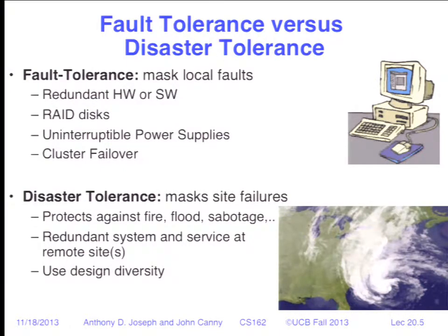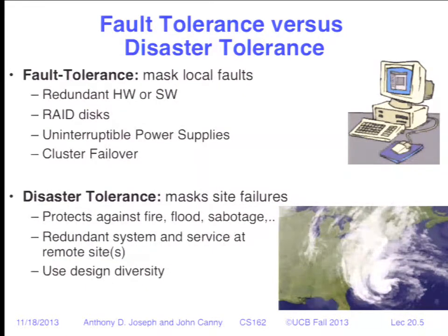When you have a fire, flood, sabotage, or a power outage — as happened on campus, taking down all data centers — you need disaster tolerance. There was still a website you could go to: emergency.berkeley.edu, because that website is hosted on a machine in a remote data center. The last time we had a campus-wide power outage, there was no way to find out what was going on on campus. Another technique is design diversity: using different versions of Linux, so that if a particular bug affects one version, it won't take down your entire implementation — it'll just take down some of your machines.